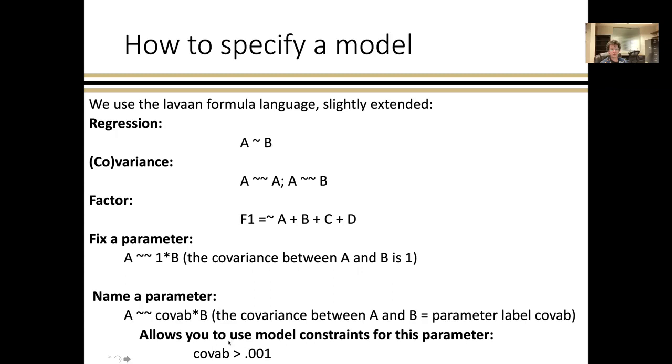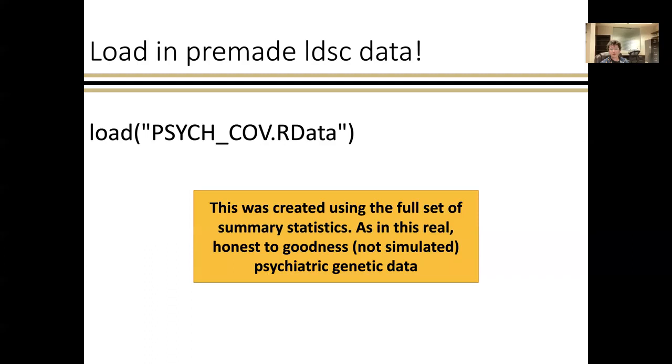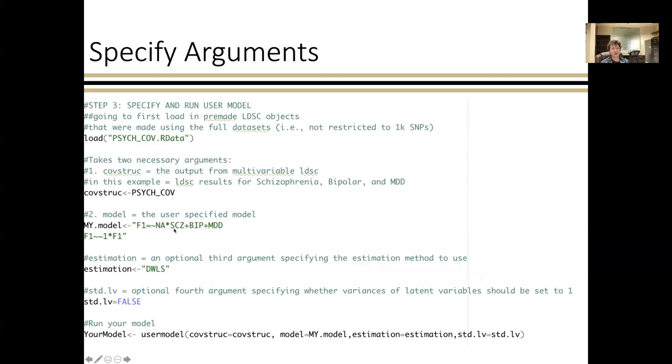We load in that pre-made LDSC data, which again is using the full set of summary statistics. This is not simulated data. Because we're using summary stats, this is often something you can readily download online. And to actually run the model, this takes two necessary arguments and two optional arguments. The first is co-struct, which is that output from LD score regression. The second is the model.